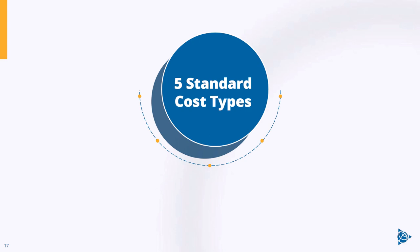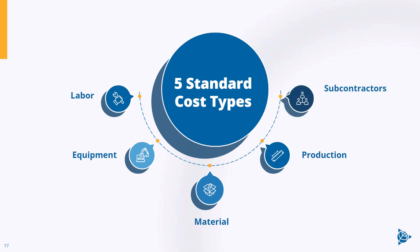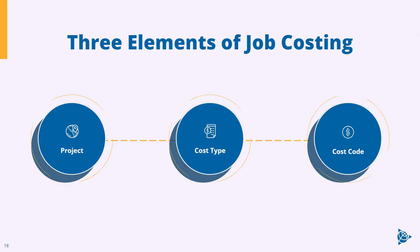There are five standard cost types in the construction industry that almost every company will use: labor, equipment, material, production, and subcontractors. Depending on the type of company, there may be additional cost types. For example, a home builder might talk about an allowance, and a civil contractor may break equipment into two categories — owned equipment and rented equipment. There will be variations, but these five cost types are standard for all construction companies.